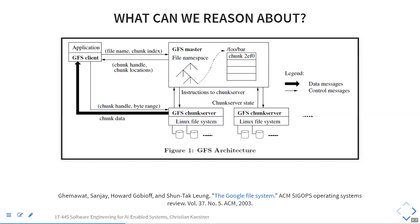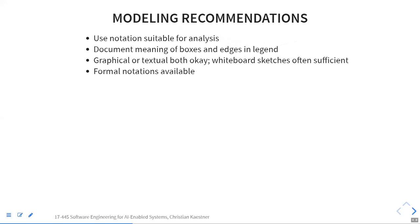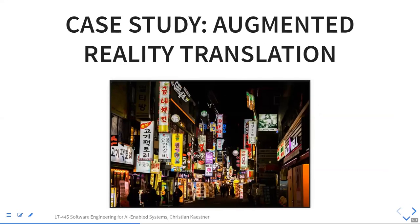To most of you, software architecture is not new. I just wanted to remind you of the idea: it's domain-specific reasoning about specific properties, using drawings tied to those properties. From here I want to move to machine learning — what kinds of architectural decisions do we encounter more or less commonly with machine learning? I want to use a case study of augmented reality translation.